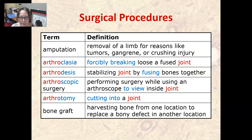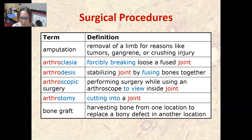Arthrodesis is the stabilizing of a joint by fusing bones together; this is often done in the spinal column, fusing one vertebra with another. Arthroscopic surgery is performing surgery while using an arthroscope to view inside the joint. Arthrotomy is cutting into a joint. A bone graft is harvesting bone from one location to replace a bony defect in another location on the same person.